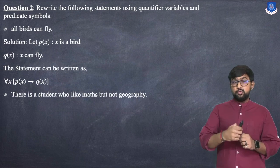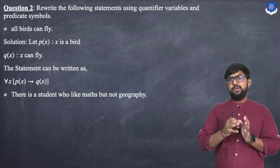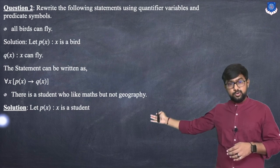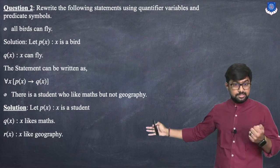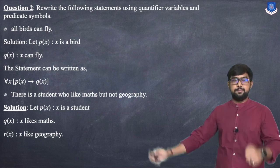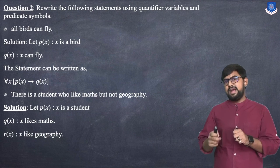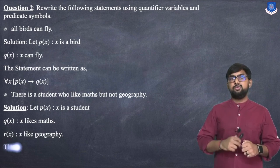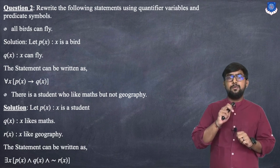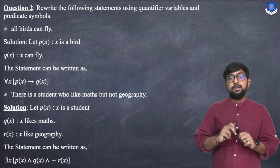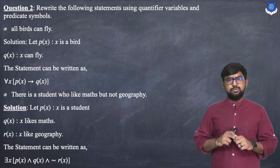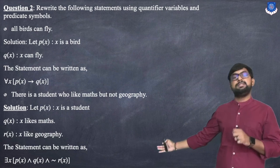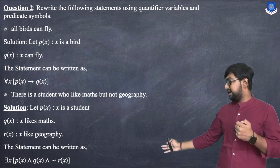Next: 'there is a student who likes maths but not geography'. Let P(x) be 'x is a student', Q(x) be 'x likes maths', and R(x) be 'x likes geography'. Since it says 'there is', we use the existential quantifier. The symbolic form is: ∃x, P(x) ∧ Q(x) ∧ ¬R(x).